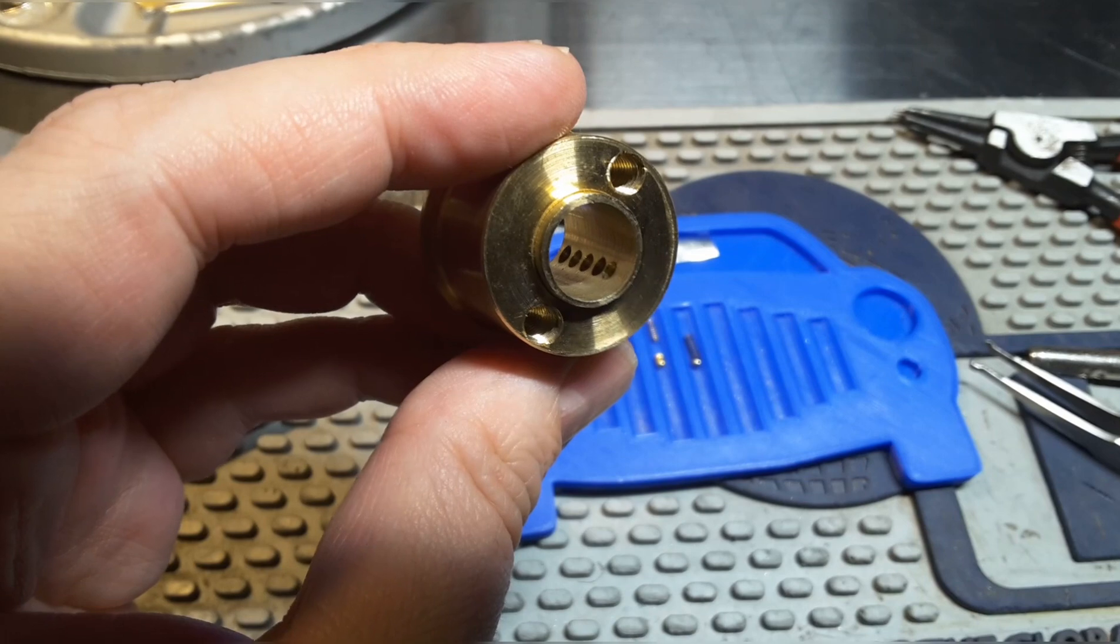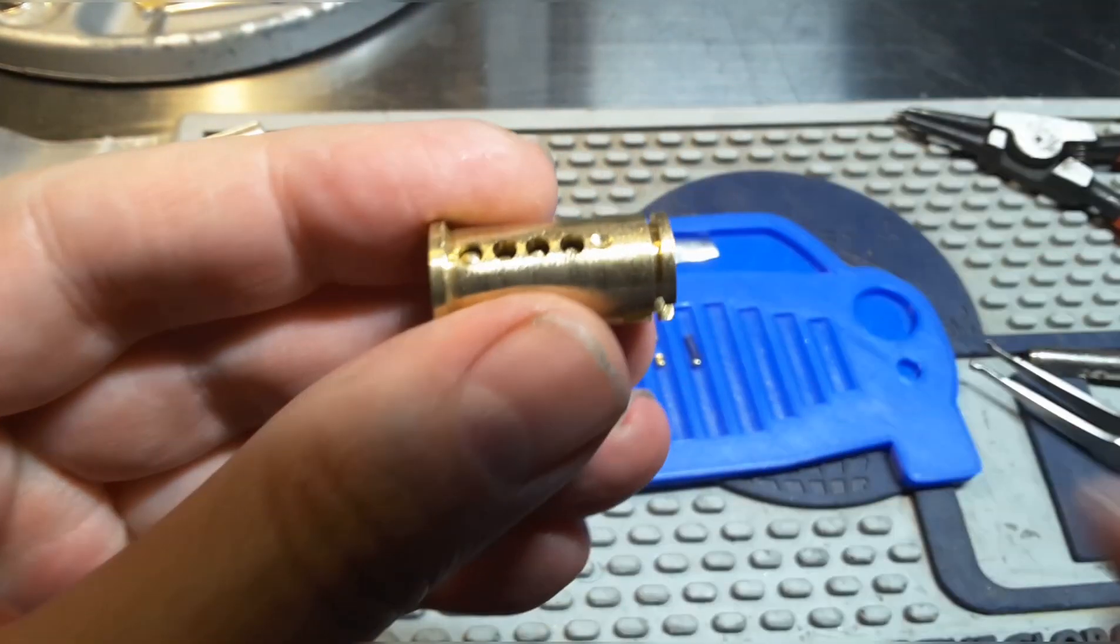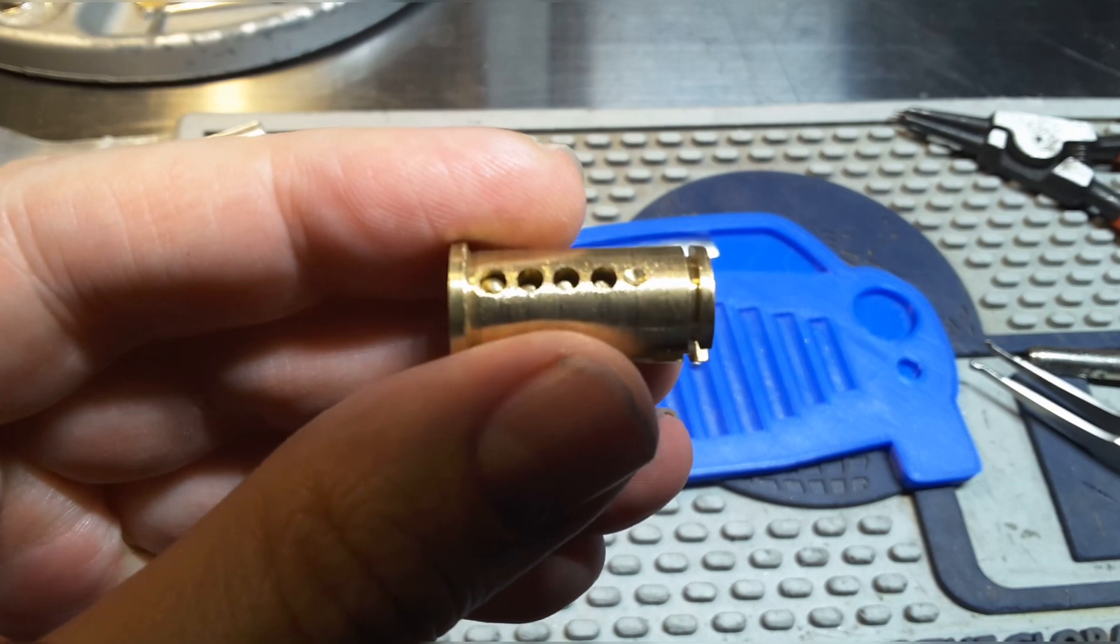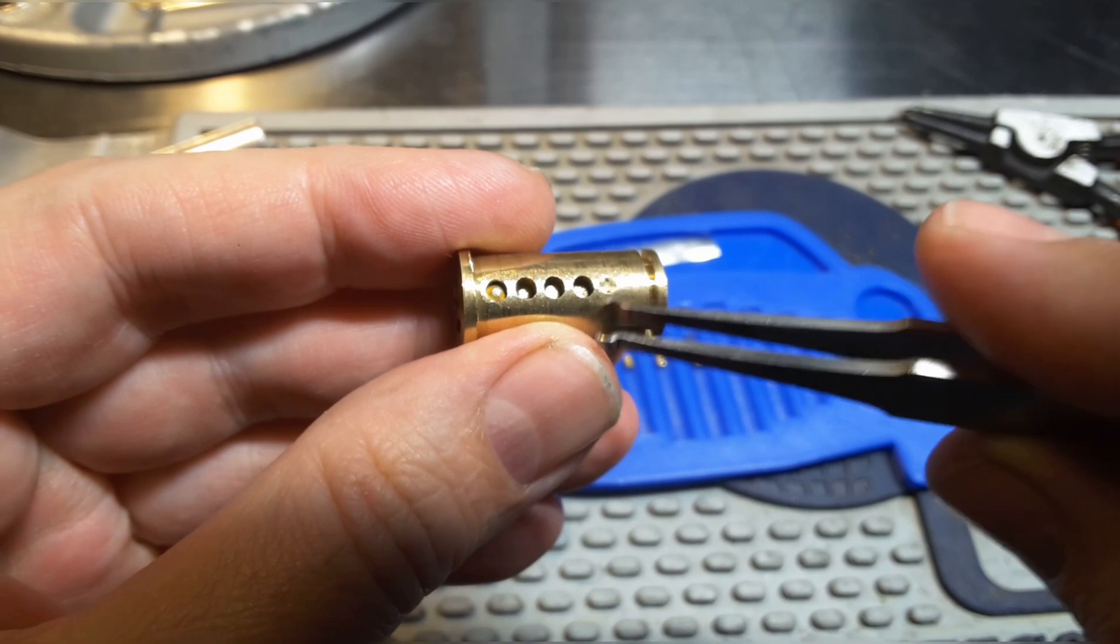As you can see, there are 5 holes. And here, in the core, are only 4 pins. And then there's a groove for the ball bearing here. This is really funny.